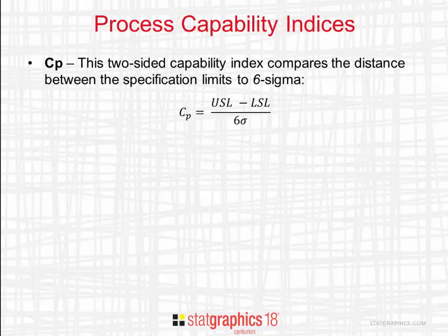The output from a process capability analysis is typically one or more capability indices. One popular index is called CP. CP is a two-sided capability index that compares the distance between the upper specification limit and the lower specification limit to six times the standard deviation of the process.